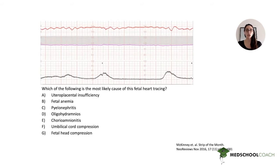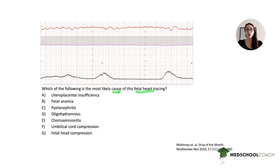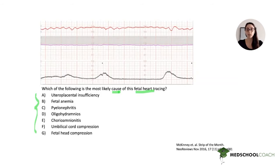Welcome back. Let's approach this question together. The first step is always to read the actual question itself — the very last sentence of the stem — and here it's asking us which of the following is the most likely cause of this fetal heart tracing. This is a question about an underlying diagnosis or etiology. We glance at the answer choices and briefly see that they all involve either some cause of abnormal heart tracing or some form of infection, so we'll keep an open mind as we read the stem.